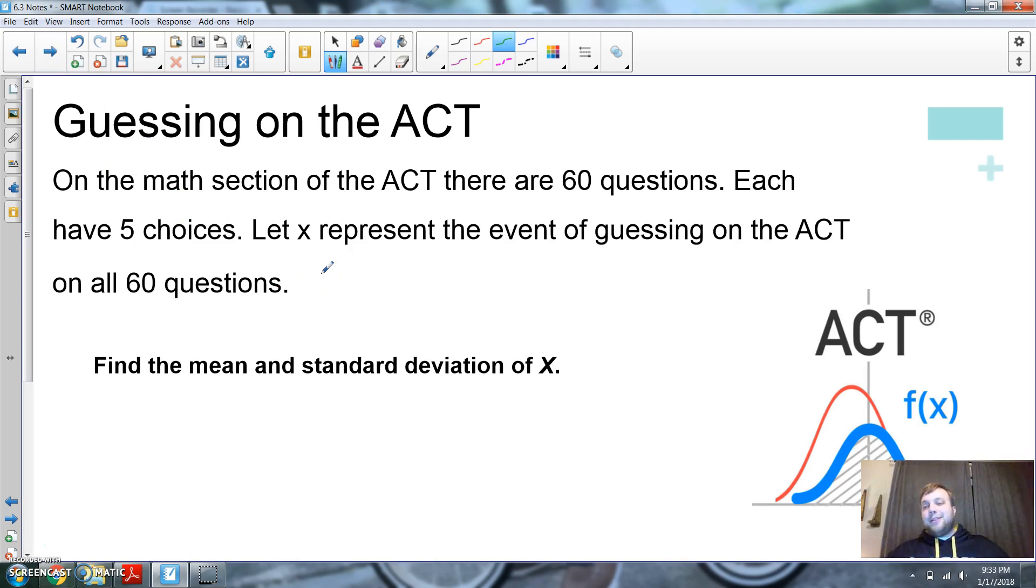Guessing on the ACT. I just did a practice ACT with my students. Holy moly. I had literally somebody took 60 math problems and got five right. How many should we expect on the ACT? Well, here we go. On the math section of the ACT, there are 60 questions and you have five choices, A, B, C, D, or E. Let X represent the event of guessing on the ACT on all 60 questions. So, the mean, how many, if you just guessed on the ACT, what would be my amount? The mean would be, well, I have 60 questions and I should get, if I'm just guessing, I should get about 20% of them. And if you do that in your calculator, you should get 12 questions.